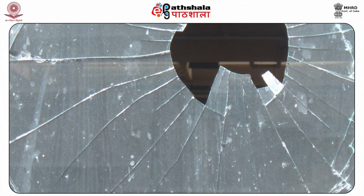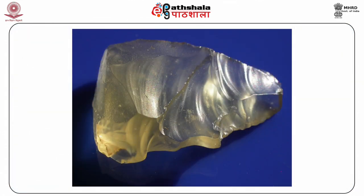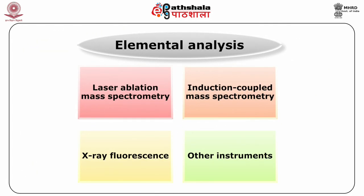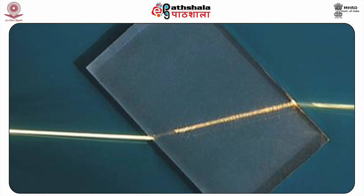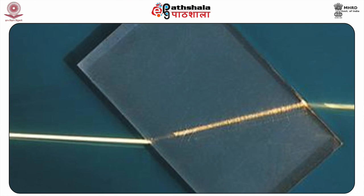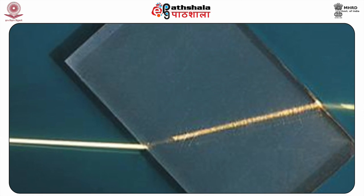Glass can yield valuable information from fracture marks, lines and patterns. Testing for unique characteristics such as color, optical properties and density can determine the type of glass — for example, a window pane, vase or bottle. A detailed elemental analysis can be done using laser ablation mass spectrometry, inductively coupled mass spectrometry, X-ray fluorescence, or other instruments. The refractive index (Ri) of glass determines the passing of light through it. Ri is measured for any fragment of glass, and this property helps in determining whether two glass samples share the same origin.